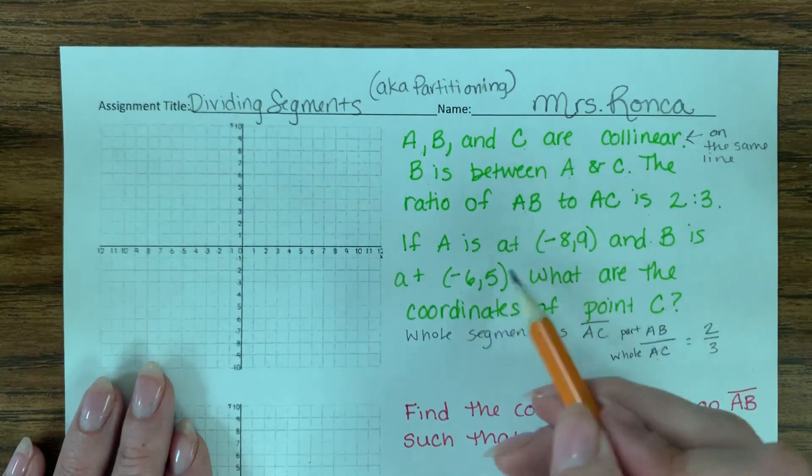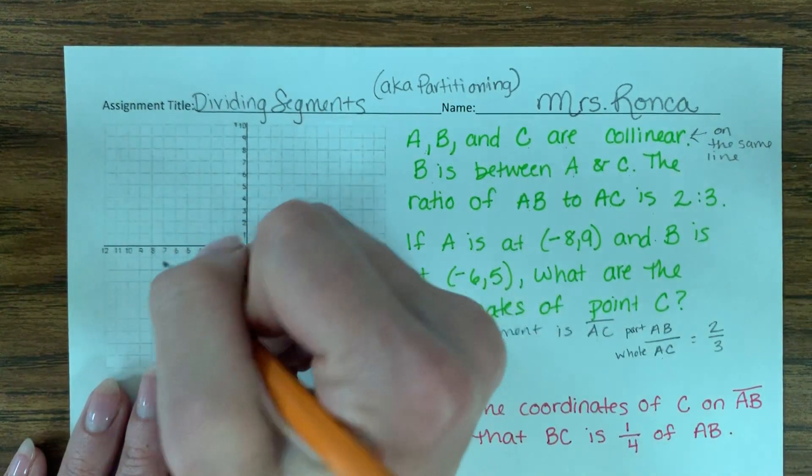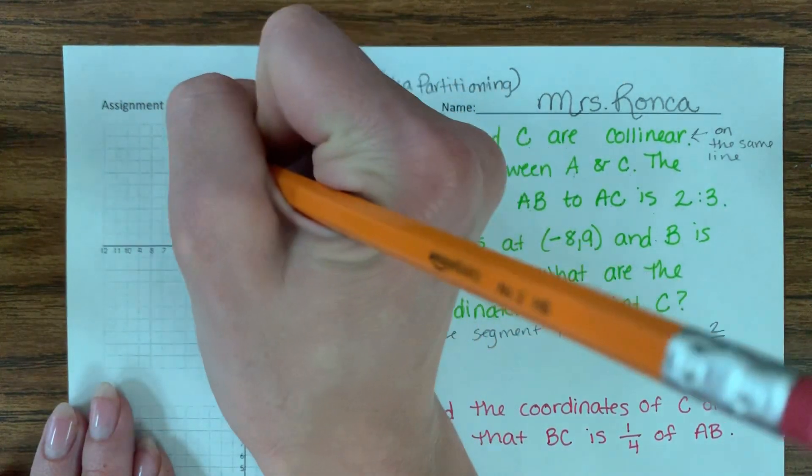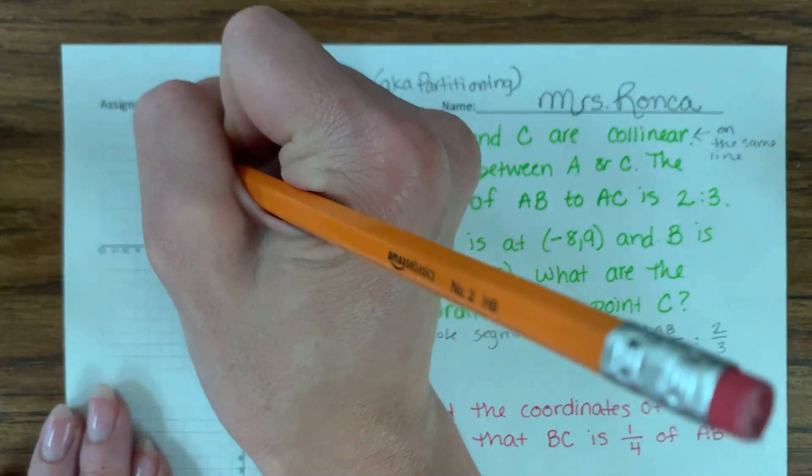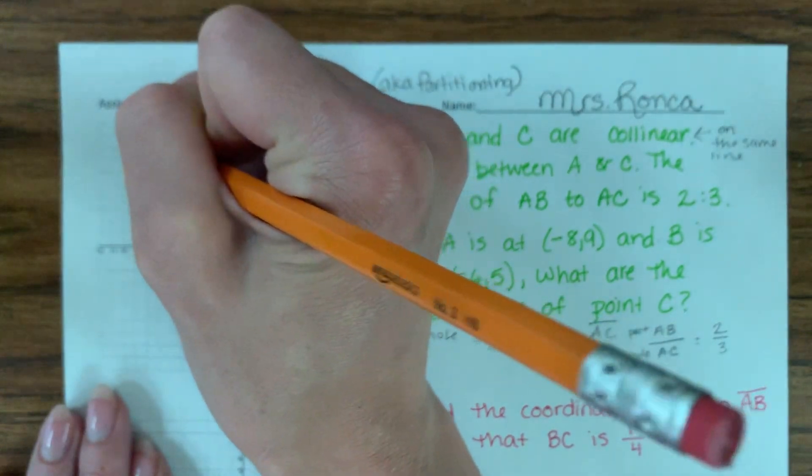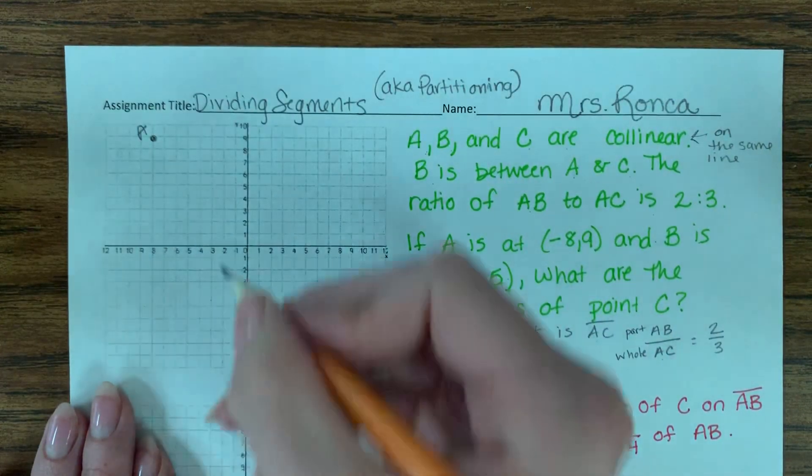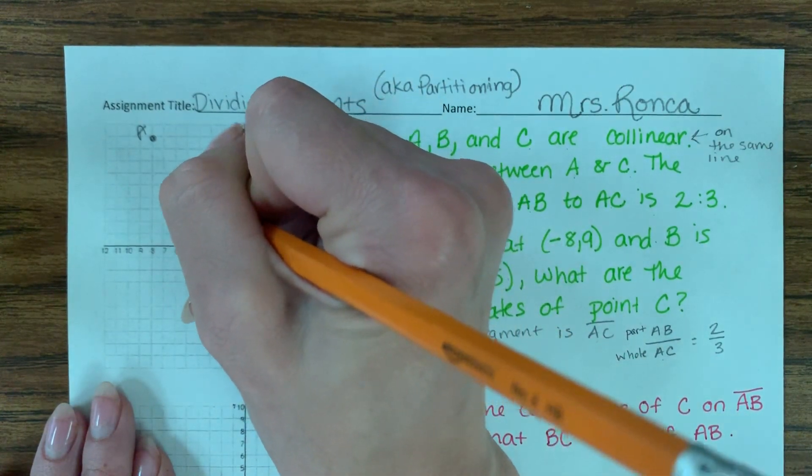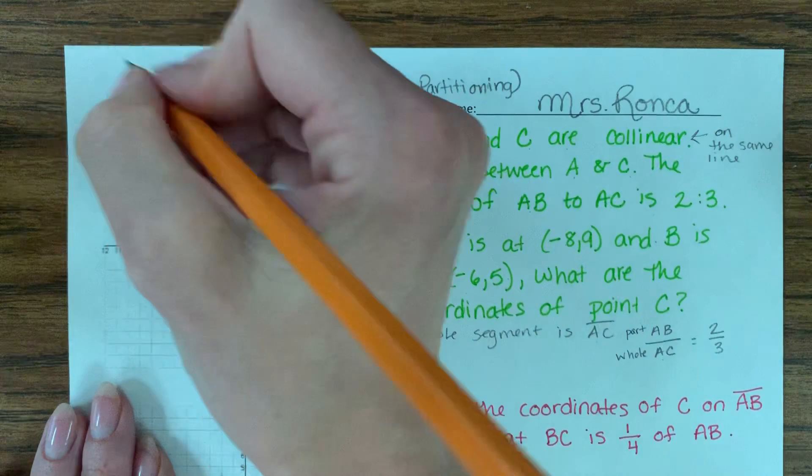I can start by graphing these two points and labeling the letters. So negative 8, 9 is going to be up here. That's A. And negative 6, 5 is going to be right here. That is B.